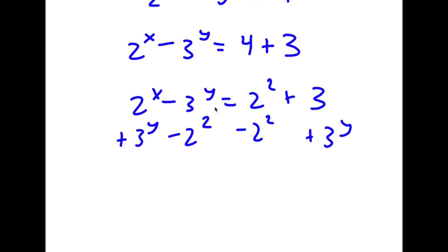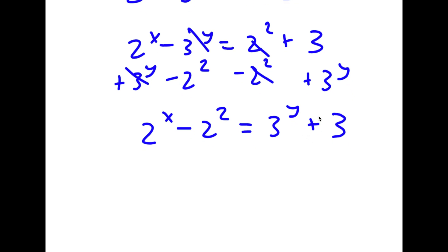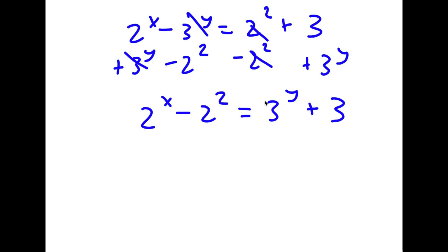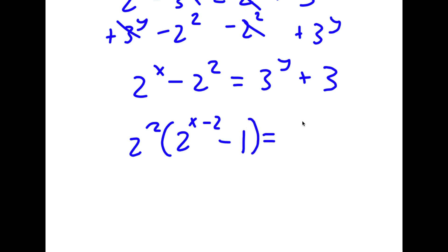I subtract 2 squared on both sides and add 3 to the power of y on both sides. These cancel out, and I'm left with 2 to the power of x minus 2 squared equals 3 to the power of y plus 3. From 2 to the power of x minus 2 squared, I factor out 2 squared to get 2 squared times 2 to the power of x minus 2 minus 1. And I factor out 3 to get 3 times 1 plus 3 to the power of y minus 1.